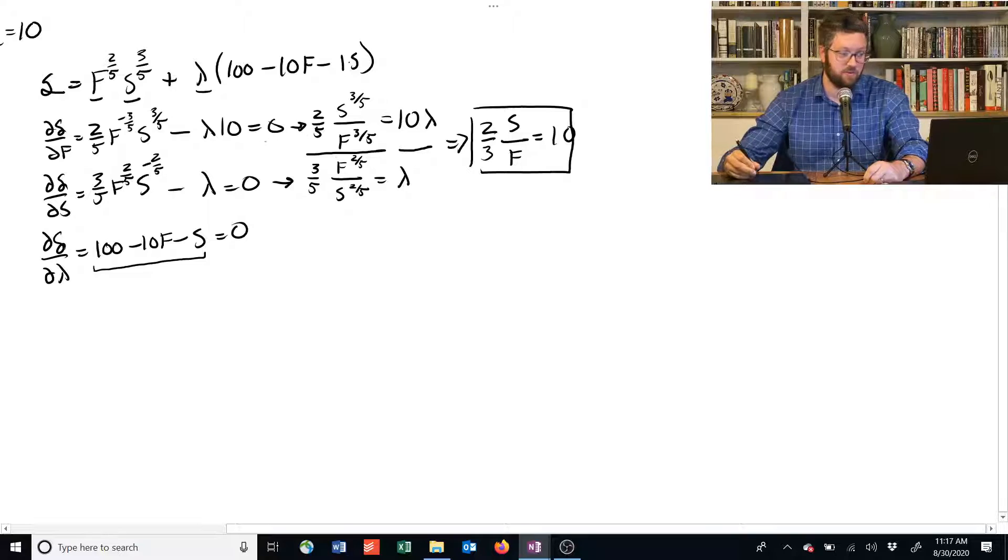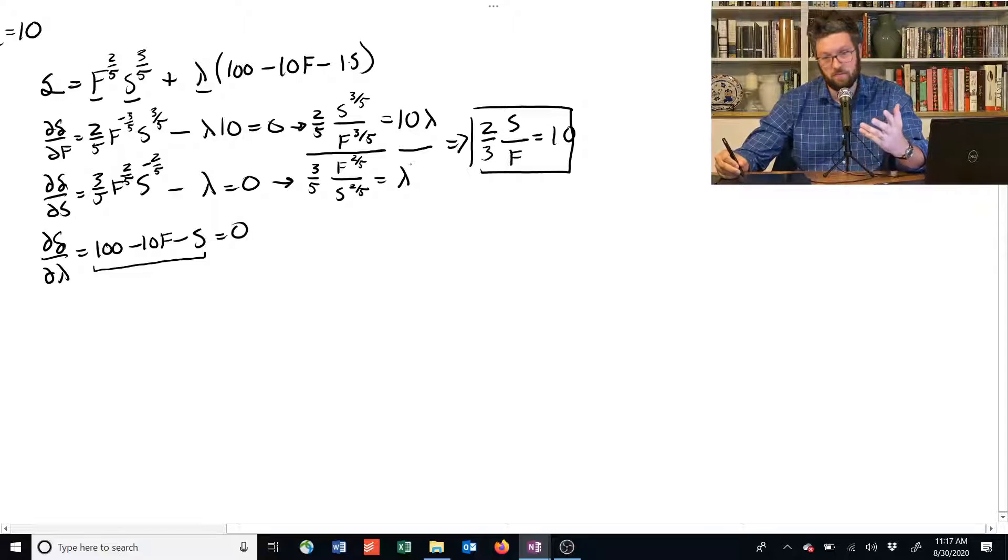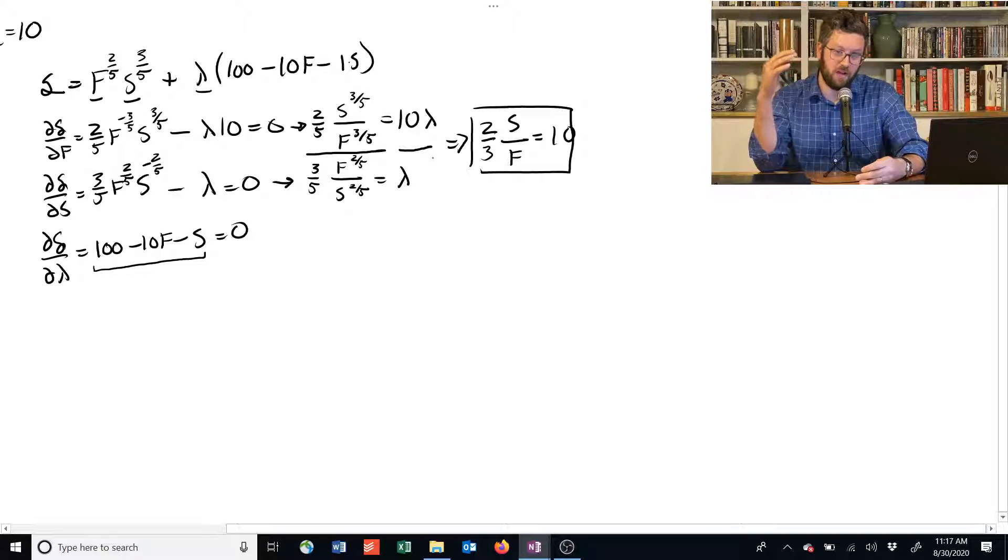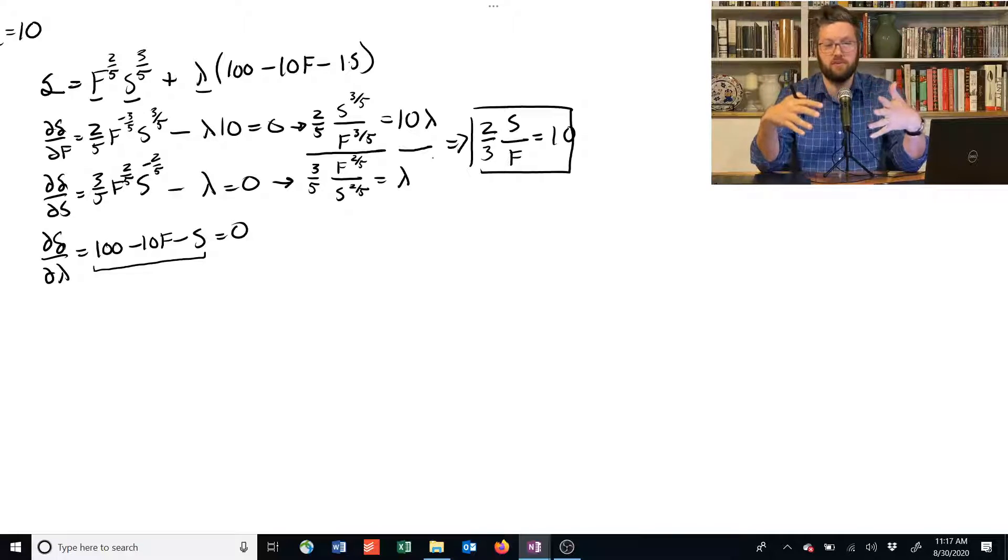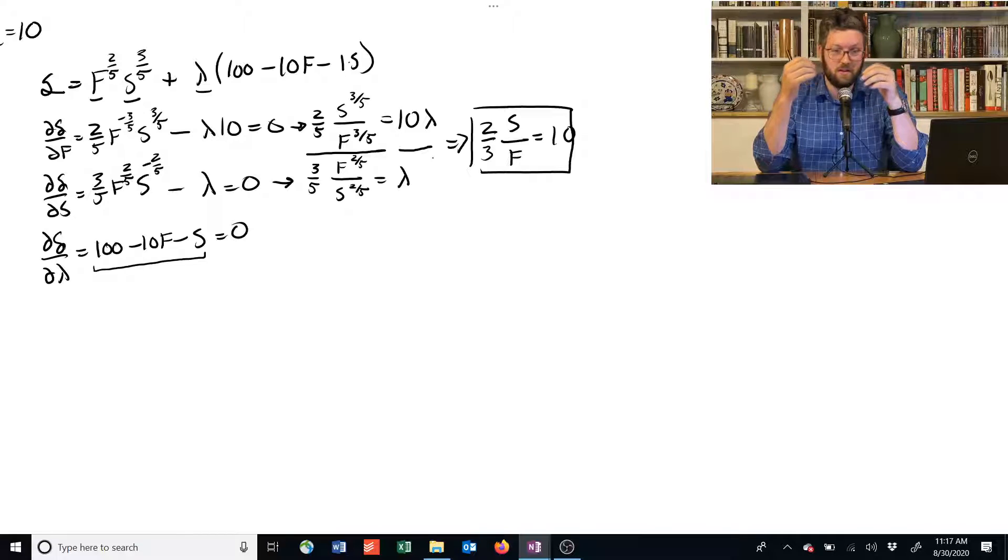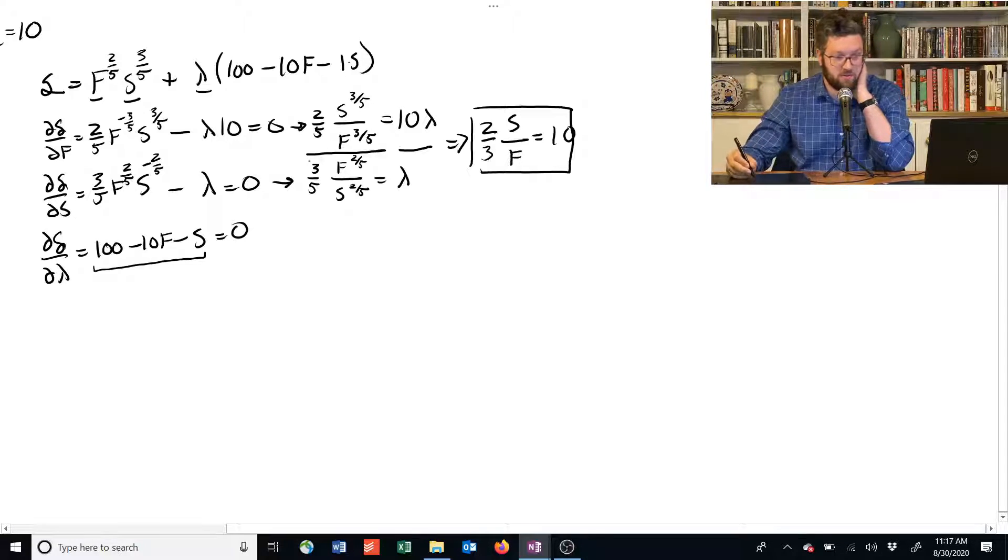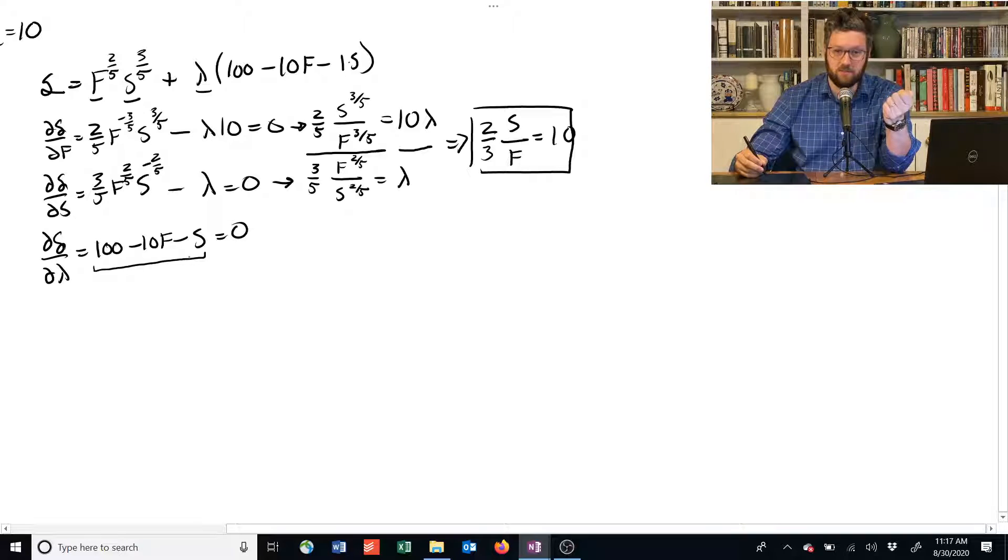This is what I mean by this approach seems very difficult, but it makes your life easier in the long run because you go through the hard work of carefully dividing these two things out and with Cobb-Douglas, you always get these very simple resulting equations where all the exponents cancel out and all the complicated stuff drops away and you get something really simple like two-thirds S divided by F equals 10. And now we have this equation, which isn't too complicated, and then our budget constraint, which is also not very complicated, and that's a much easier system to solve than something with a lot of exponents in it. So, where do we go from here?